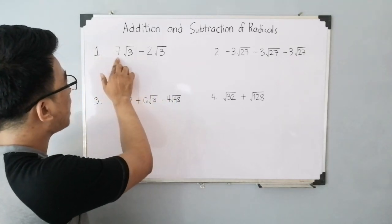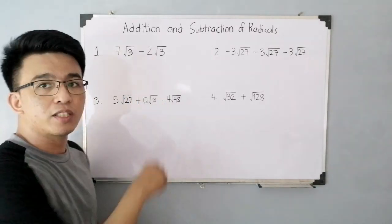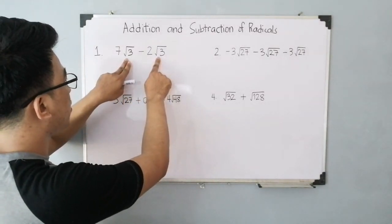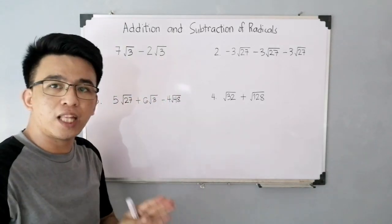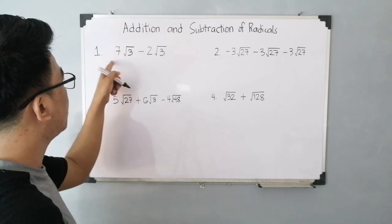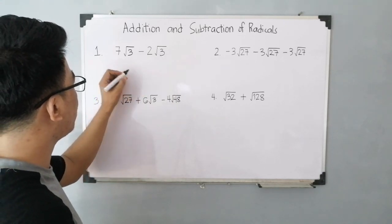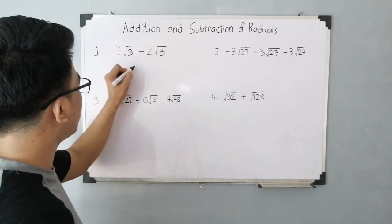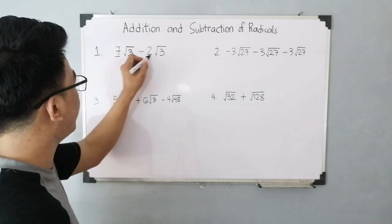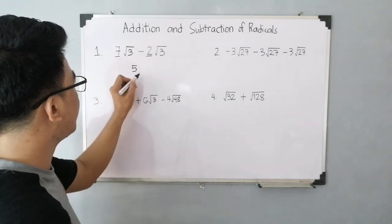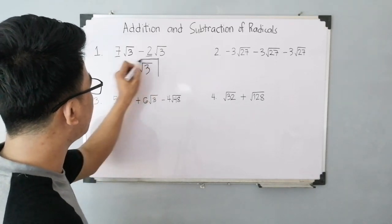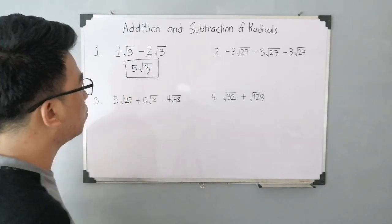We have here 7 times the square root of 3 minus 2 times the square root of 3. They are both square root of 3, which means we can add them. So all you need to do is subtract the coefficients. We have 7 minus 2, that will give you 5. The coefficient is 5, and then copy the common radical which is square root of 3. This is the answer for item number 1.